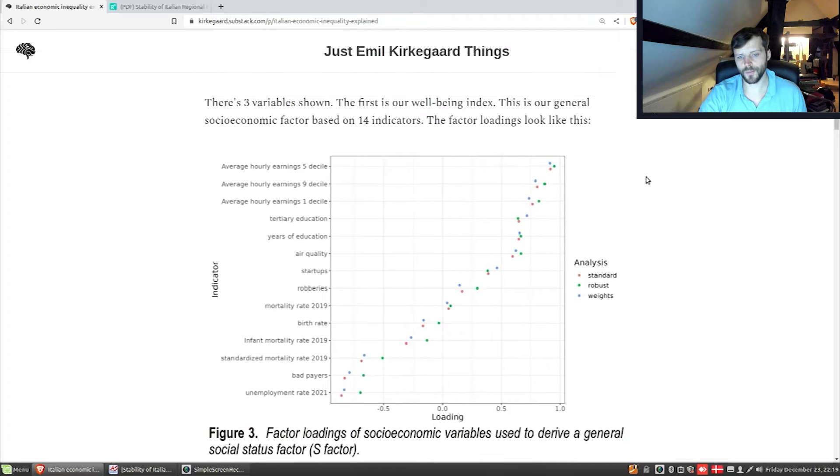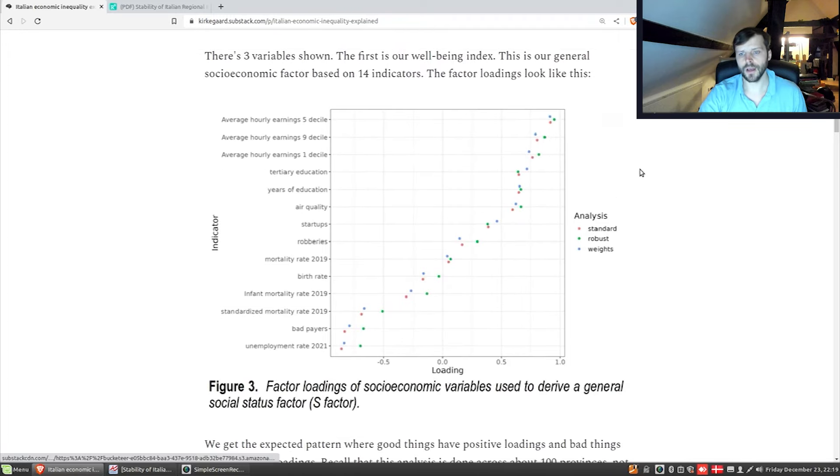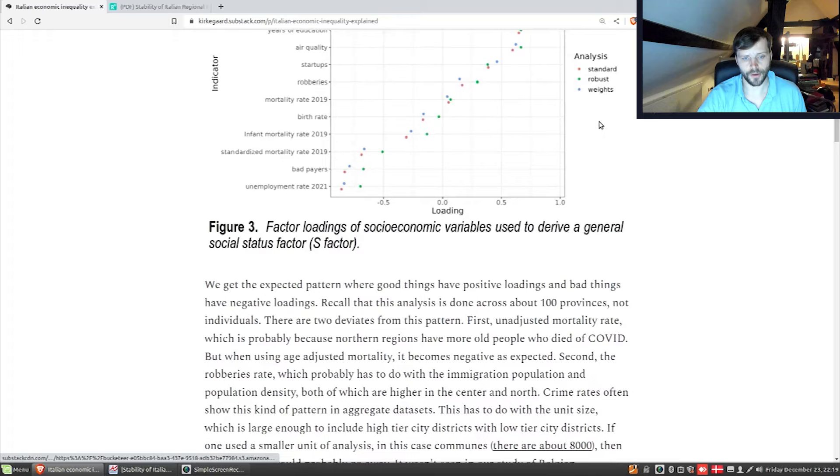It is possible one could adjust for this using an adjustment for population density, but we did not attempt it here. But generally speaking, this kind of anomaly with the S-loading happens when the regional units are too large. If one had, instead of provinces, city districts or communes, then it's quite likely this robbery loading would go back down to being negative, as most robberies really do happen in the worst parts of town, even if the town overall is good. They're in the ghetto parts.